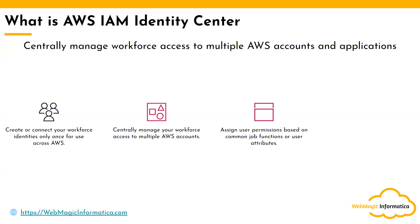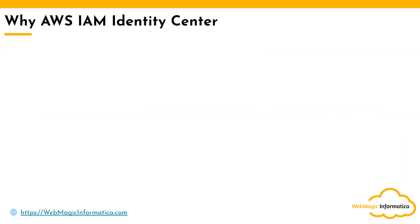You can assign user permissions based on their common job function or attributes. The same IAM roles and IAM policies can be used here, and users can be given access to different resources. It provides your workforce with a single sign-on experience — once a user account is created, the user can authenticate to multiple AWS accounts, such as development, testing, and production accounts. You can also integrate AWS applications like Workspace, WorkDocs, WorkMail, or even third-party applications such as Zoom Meetings or Microsoft Teams.